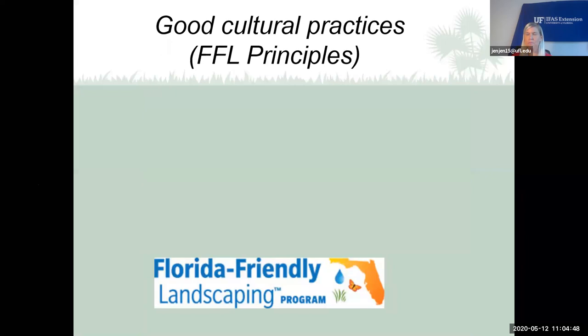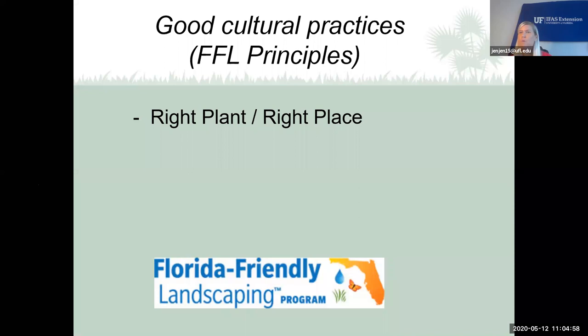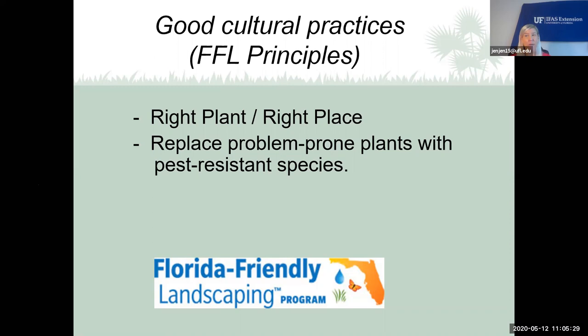Pest management includes good cultural practices. We really stress the right plant for the right place — finding the right environment for the plant you want to grow and making sure it's planted properly. If you have sun, plant something that likes sun. If you have shade, plant something that likes shade. If you have a dry area, make sure the plant can sustain drought. A plant in the right place will be healthier and happier.